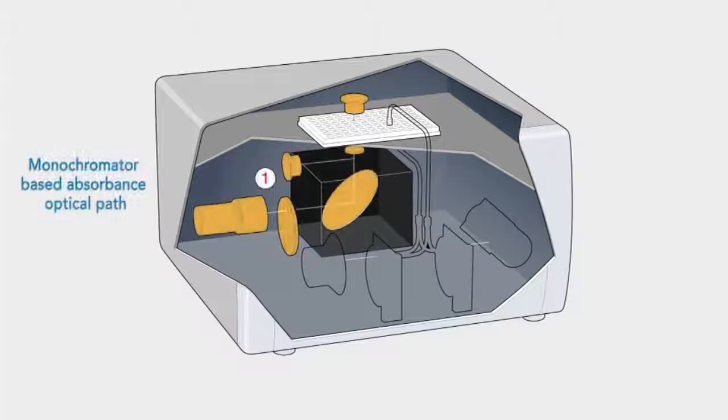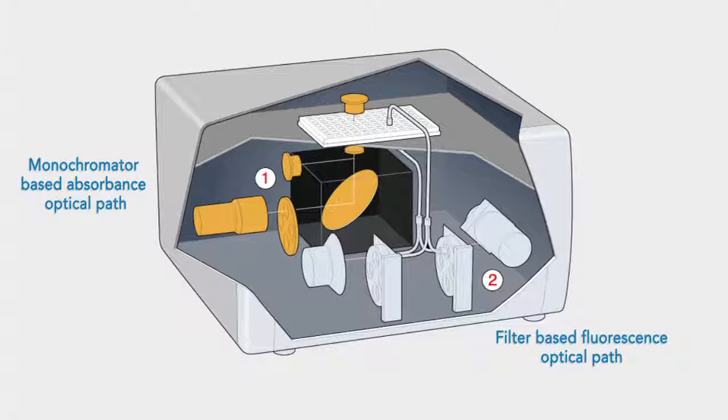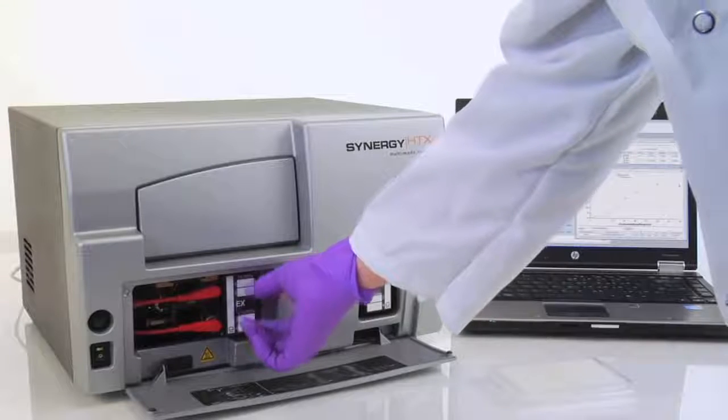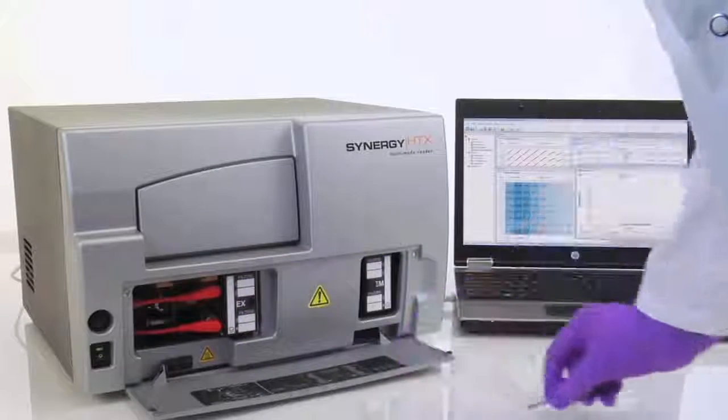Convenient monochrometer-based absorbance measurements from 200 to 999 nanometers in 1 nanometer increments are made using a xenon flash lamp with signal detected by a silicon photodiode. Fluorescence determinations are made using a tungsten halogen lamp with interference filters for wavelength specificity in conjunction with a PMT detector.